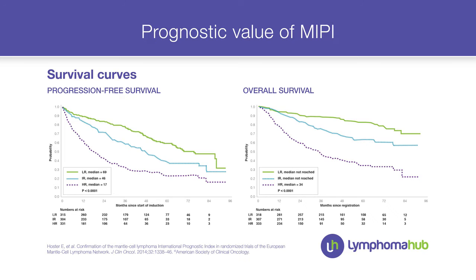A mantle cell lymphoma-specific scoring system called the MIPI — the Mantle Cell Lymphoma International Prognostic Index — has been established. It incorporates performance status, age, LDH, and leukocyte count. With just these four simple parameters we are able to differentiate very low-risk from very high-risk cases. Importantly, Ki-67 is independent of these clinical parameters.